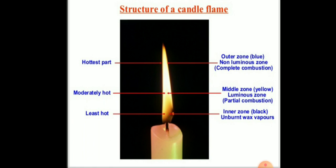Our next topic is the structure of a candle flame. A candle flame has three zones. The outer zone is the hottest part, blue in color, called the non-luminous zone, where complete combustion takes place. The middle zone is moderately hot, yellow in color, called the luminous zone, where partial combustion takes place. The inner zone is the least hot, black in color, and contains unburnt wax vapors.